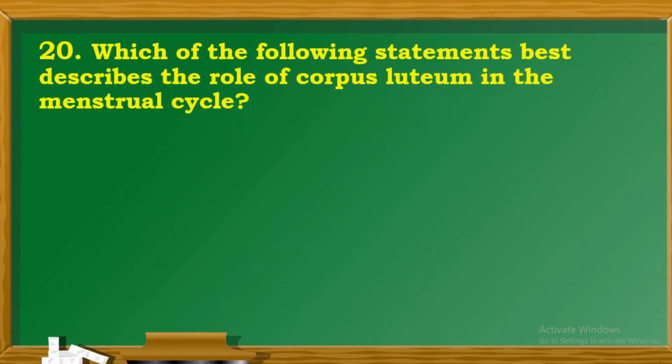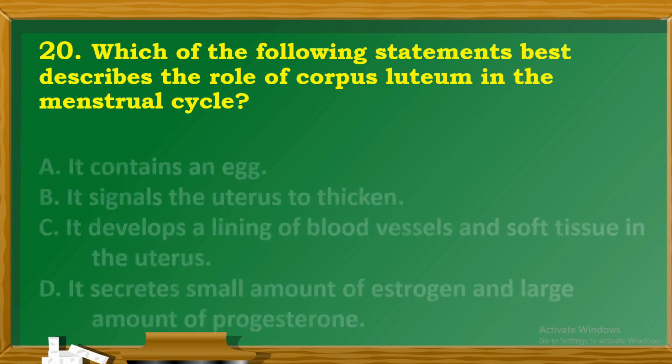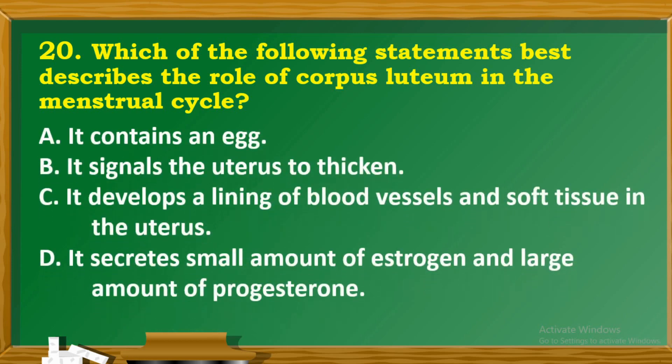Question 20: Which of the following statements best describes the role of corpus luteum in the menstrual cycle? A. It contains an egg. B. It signals the uterus to thicken. C. It develops a lining of blood vessels and soft tissues in the uterus. D. It secretes small amounts of estrogen and large amounts of progesterone.